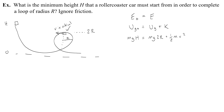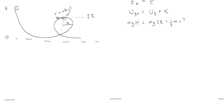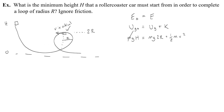To solve for h, it's going to be a lot easier if I get rid of the mass first. Then the next thing I'm going to do is divide everything by g, so what I get once I clean things up is h equals 2r plus v-squared over 2g.